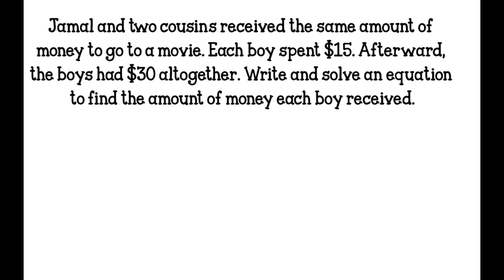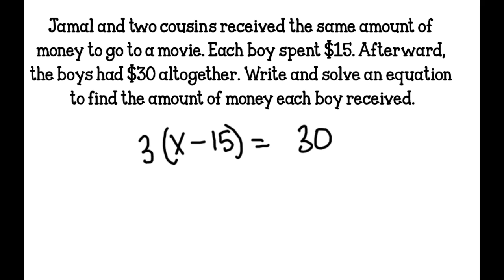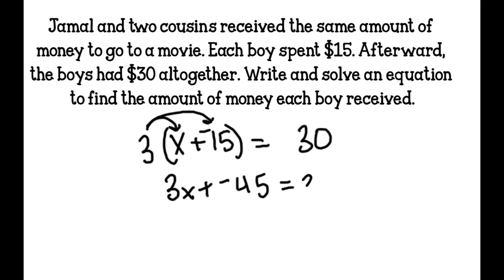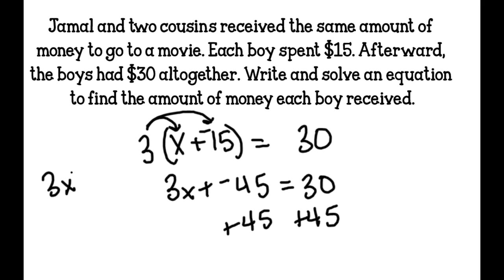Word problem: Jamal and two cousins received the same unknown amount of money X to go to a movie. Each boy spent $15, so that's minus 15. Afterwards, the boys had $30 altogether. There were 3 of them, so the equation is 3 times the quantity of x minus 15 equals 30. Using distributive property: 3x plus 3 times negative 15 is negative 45, equals 30. Adding positive 45 to both sides: 3x equals 75. Dividing both sides by 3, x equals 25. Each boy received $25 originally. Circle it, and that's my answer.